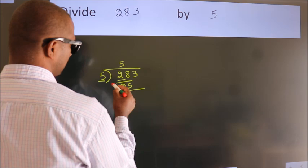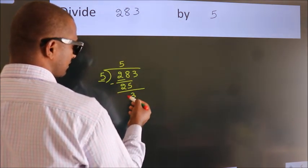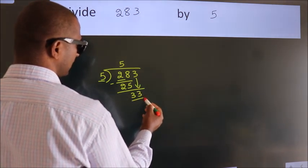Now, we should subtract. We get 3. After this, bring down the beside number. So, 3 down. So, 33.